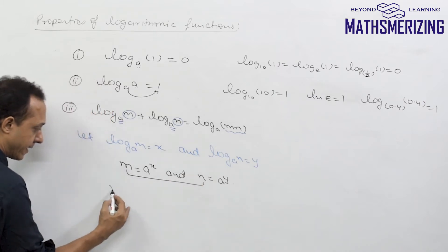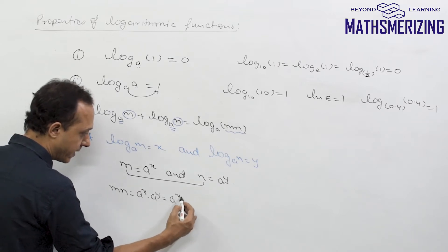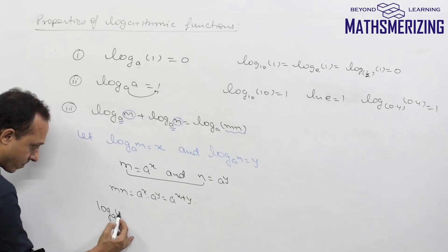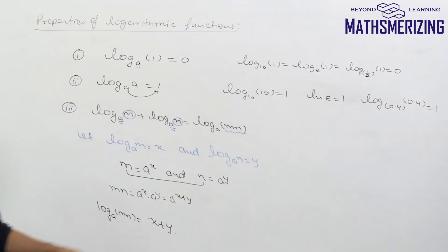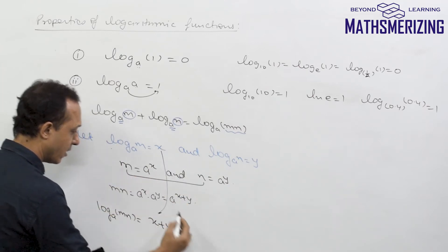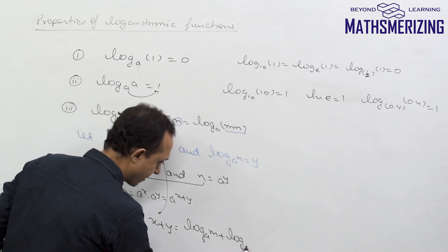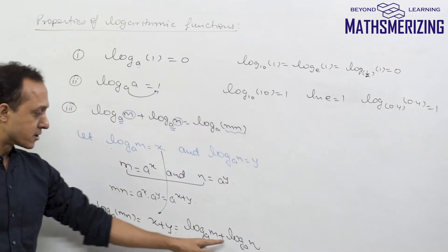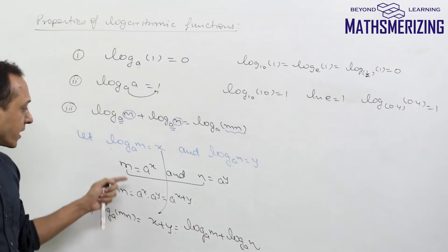Multiplying m and n gives m·n equals a to the power x times a to the power y, which is a to the power (x plus y). Taking log, the power of a equal to m·n is x plus y. Since x is log_a(m) and y is log_a(n), we get the property: log m plus log n equals log(m·n).